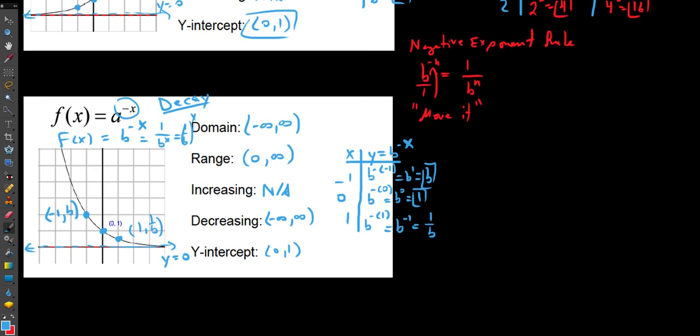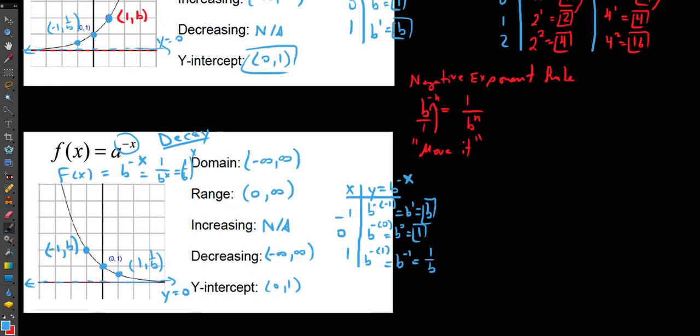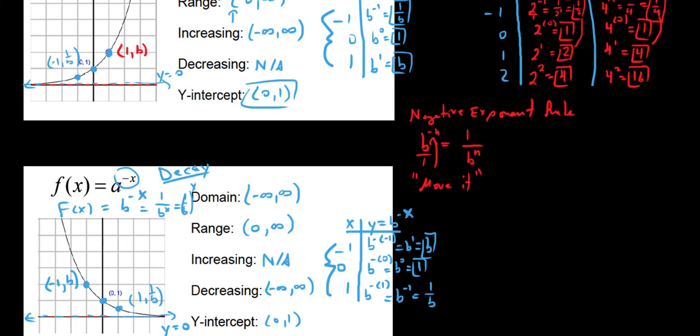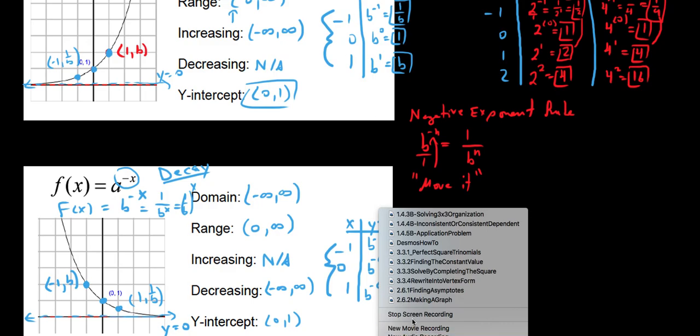In the next video, we're going to look at transformations of these graphs. It's worth knowing what these parent functions look like off the top of your head. With exponential parent functions, we always table these same three values — around the origin — because beyond that, the graphs get less interesting: very steep on the right and very close to 0 on the left.